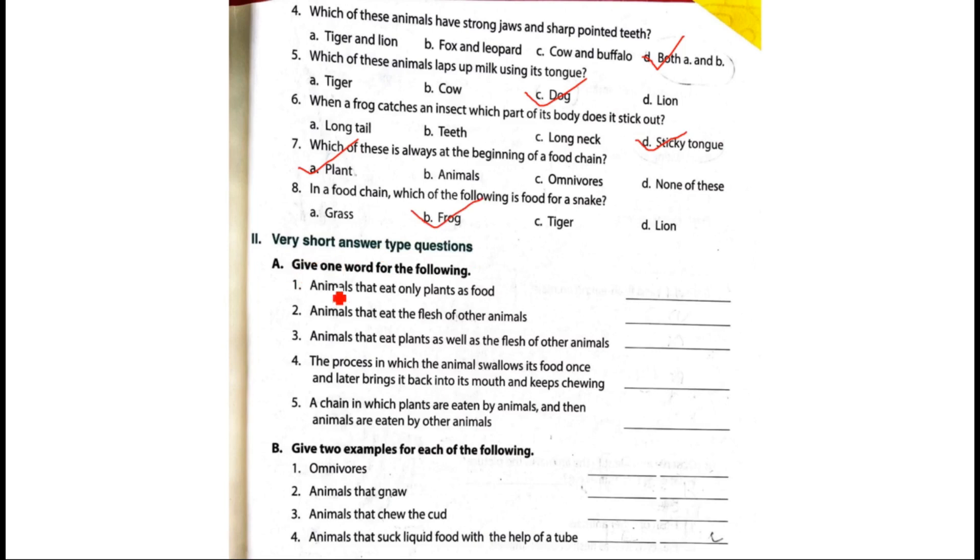Write short answer type questions. Give one word for the following. Animals that eat only plants as food? Answer is herbivores. Animals that eat the flesh of other animals. The answer is carnivores.